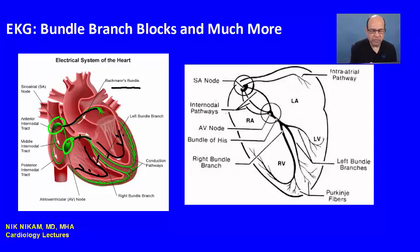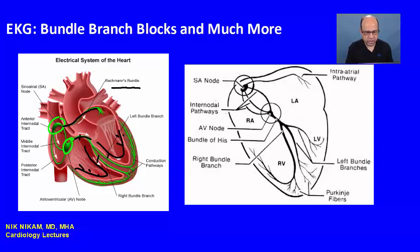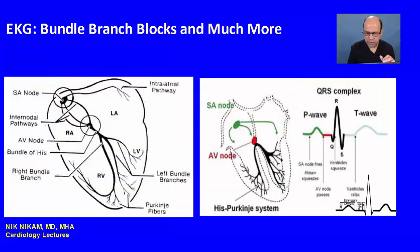On the right side we have one main bundle which is the right bundle, but on the left side we have the left anterior fascicle and the left posterior fascicle. Under certain circumstances we can see just fascicular blocks or a combination of a bundle branch block and a fascicular block. That is the anatomy of the electrical system — now let's see how the impulse is propagated through it.